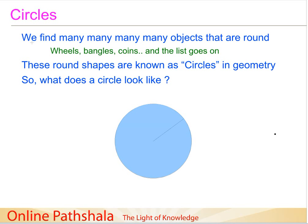Welcome back. In this final session on basic geometrical ideas, we are going to discuss circles. You would see many objects around yourself that are round in shape. Some common examples are the wheels of a car or bicycle, bangles that are round in shape, and coins. There are lots and lots of things around us which are round in shape, and these round shapes are known as circles in geometry.